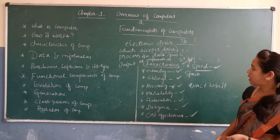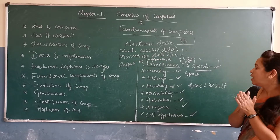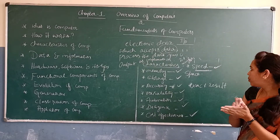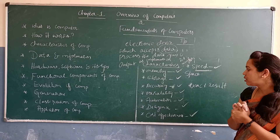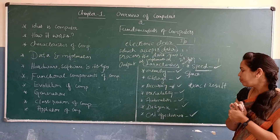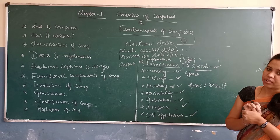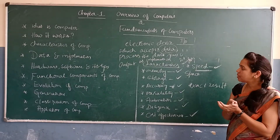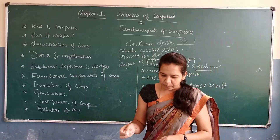Those are the characteristics of the computer. To summarize: speed, memory, storage, accuracy, versatility, automation, diligence, and cost-effectiveness. That is all about the characteristics of the computer.